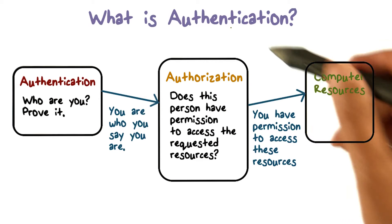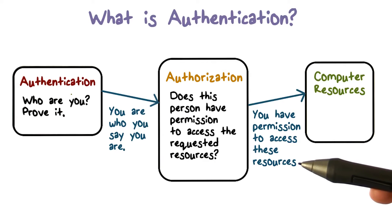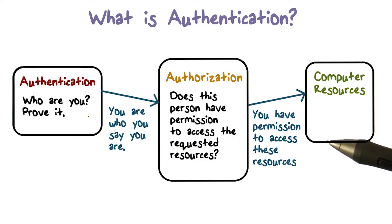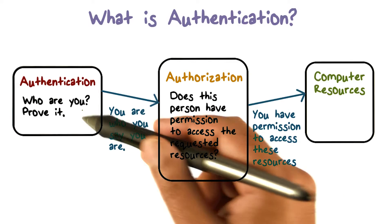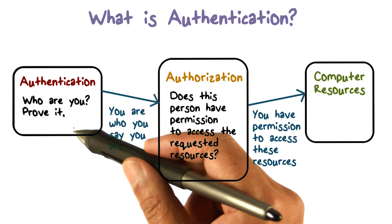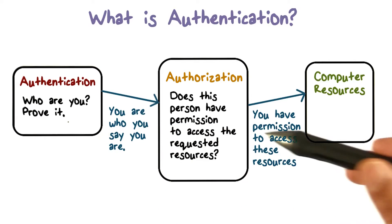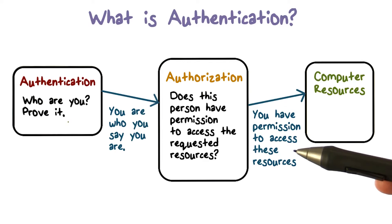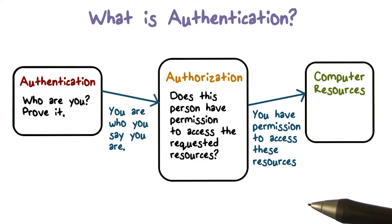Let's look more closely at what authentication really is. We said we have to establish the source of a request. We have to ask the question: who are you, if you happen to be the source? You can't just claim to be anybody. When you claim that you are Alice, you have to provide some evidence to convince us that you really are Alice. So authentication is knowing the identity of the source and establishing that it is indeed that person who is making that claim about the identity.